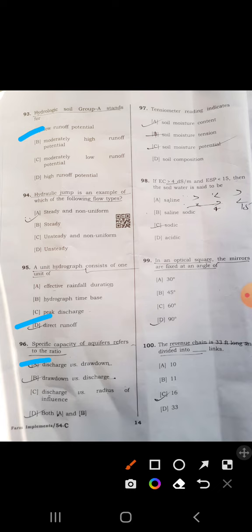Ninety-seventh: tensiometer reading indicates soil moisture tension. Some books say soil moisture potential, but exact answer is B, soil moisture tension. Ninety-eighth: if EC greater than 4 dS per meter and ESP less than 15, then the soil is sodic or alkaline.